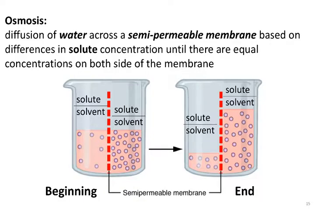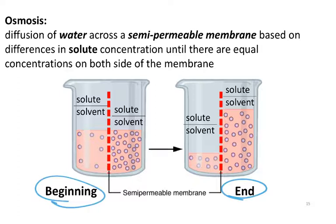The beginning and end states are shown in this diagram. At the beginning, on the left side of the beaker, you have a lot of solvent water (the peach color) and a tiny bit of solute (the purple). On the right side, you have a lot more solute and correspondingly less solvent. That sets up a concentration gradient, so that over time you have equal concentration — equal ratios of solute to solvent on both sides of the semi-permeable membrane.